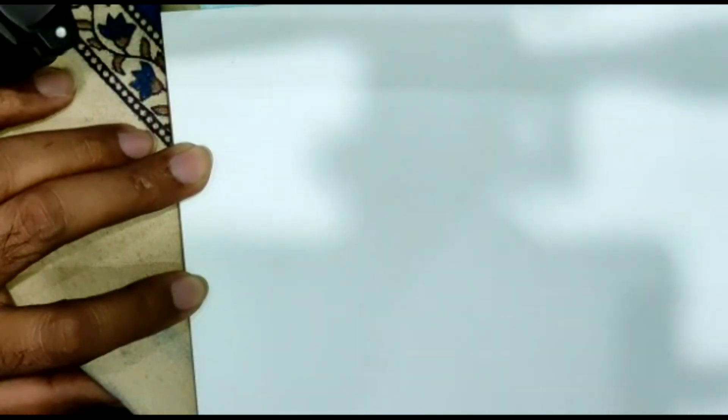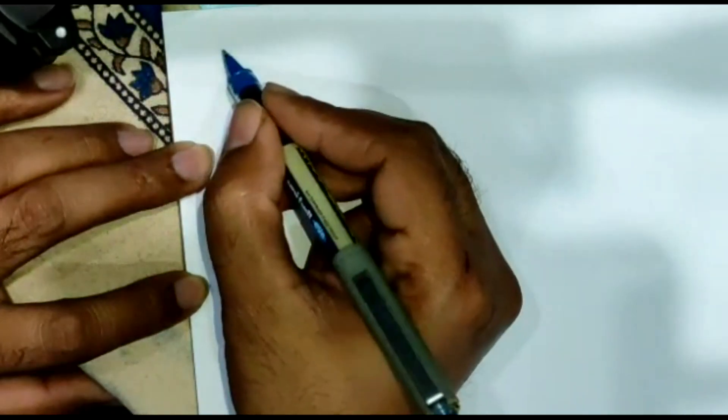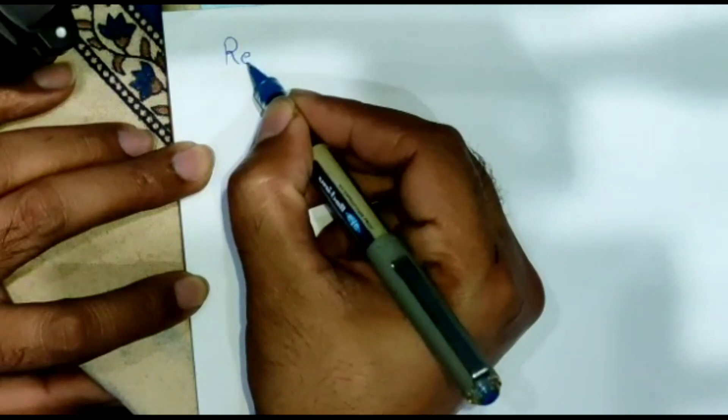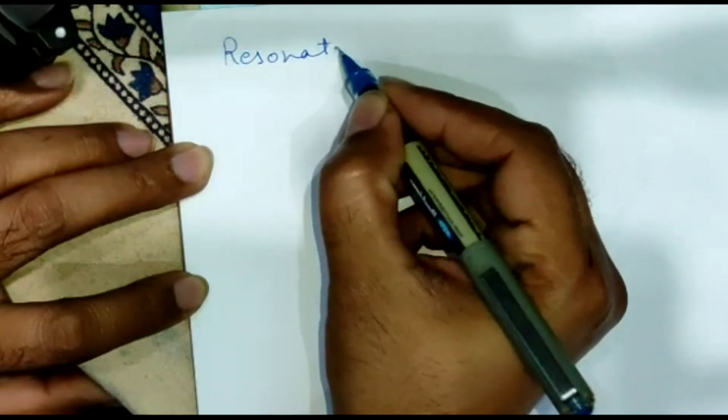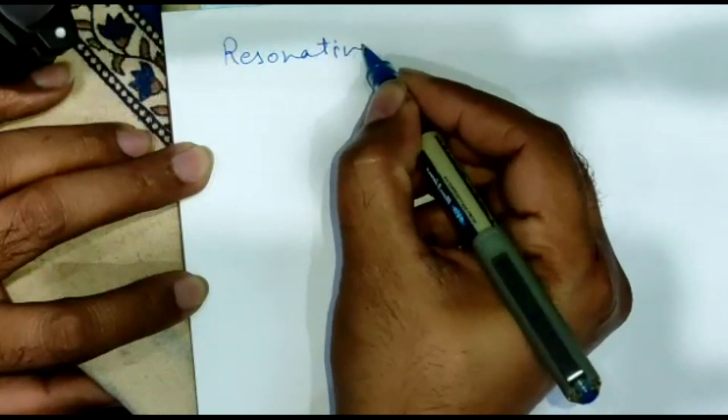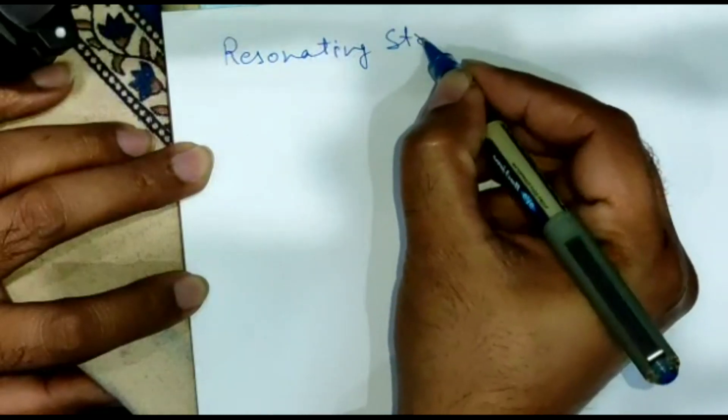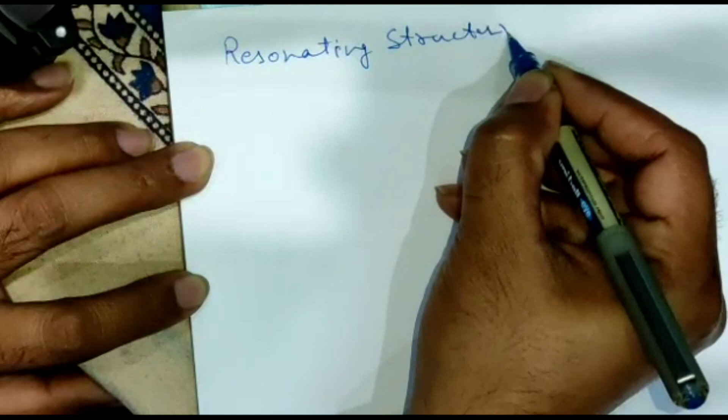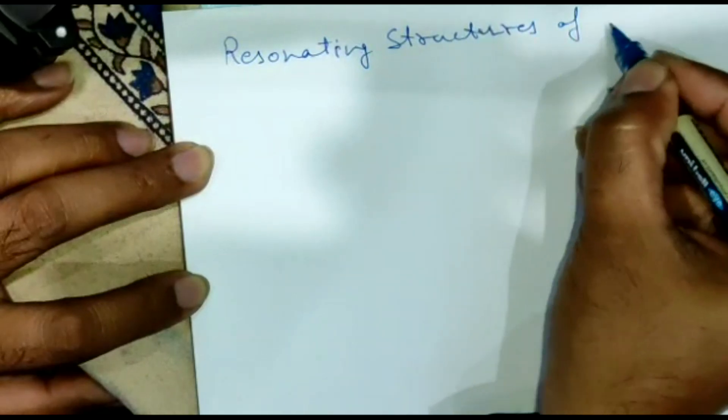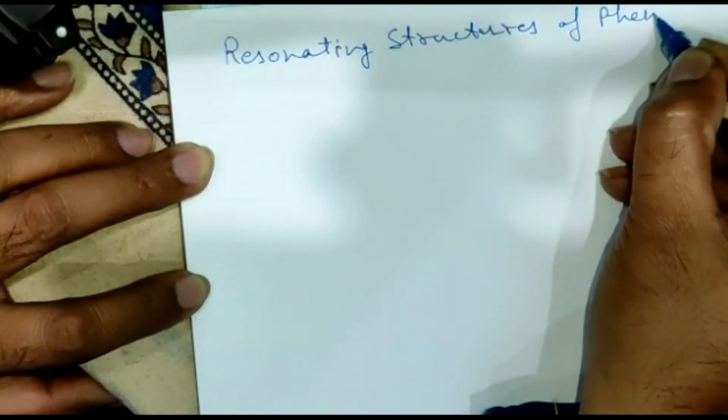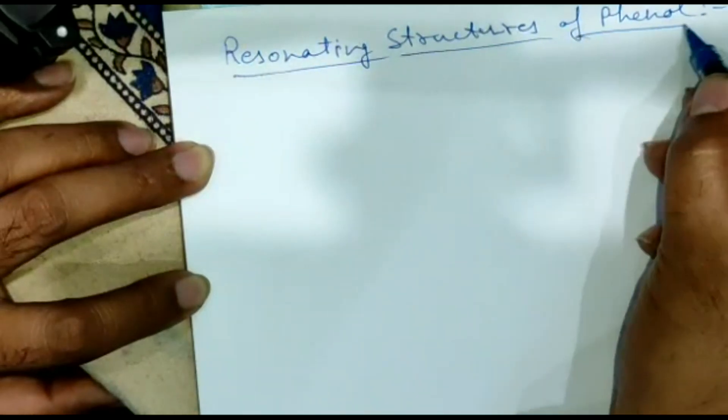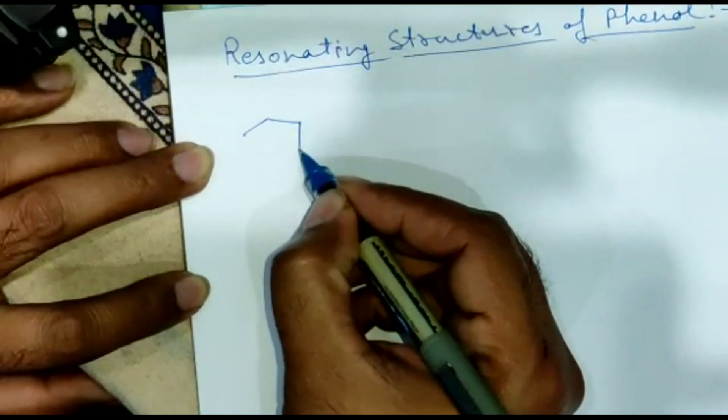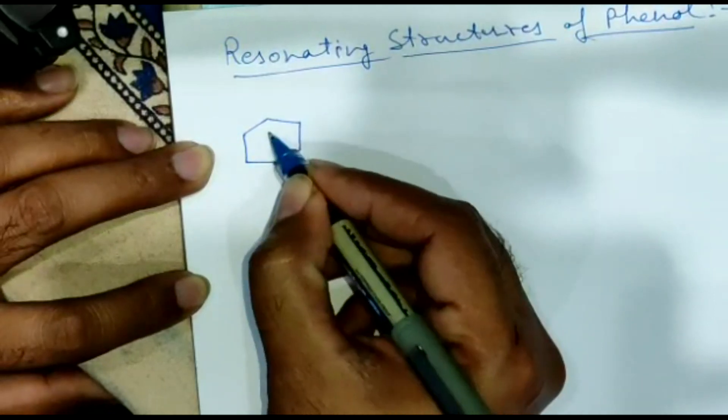Hello students, today we will learn how to draw the resonating structures of phenol. Now what is phenol? Phenol is actually benzene with an OH group above it.